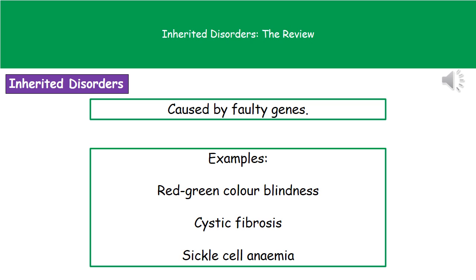Welcome to our review on inherited disorders. When we're talking about inherited disorders, they are ones that are caused by faulty genes. You've got three examples you need to remember for your exam: red-green colorblindness, cystic fibrosis, and sickle cell anemia.